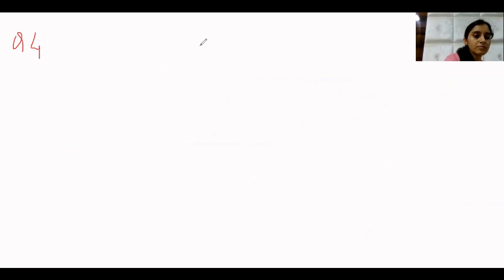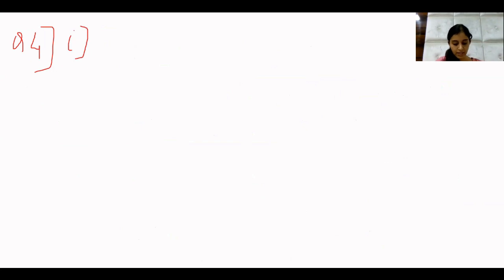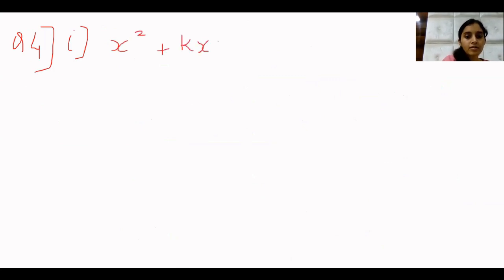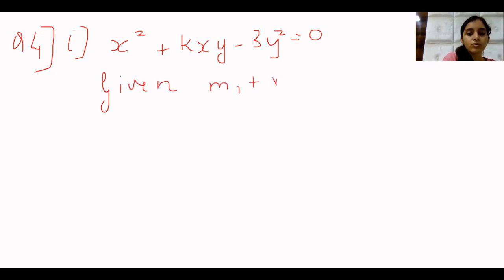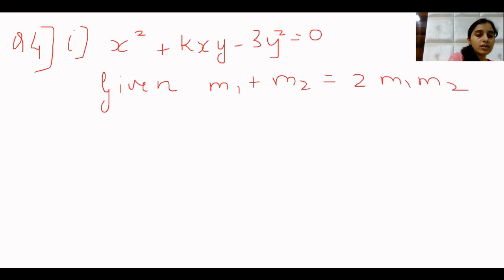Let's move to question 4 now. I am doing the first one in question 4. It says find k if the sum of the slopes of the lines represented by x² plus kxy minus 3y² equal to 0 is twice their product. So the given condition is M1 plus M2 equals 2 times M1·M2.